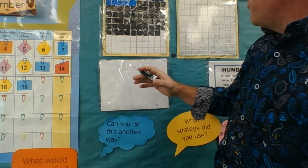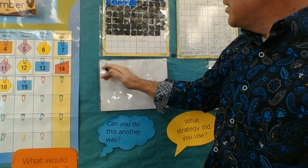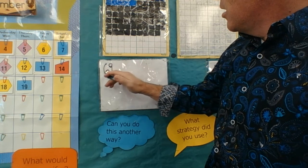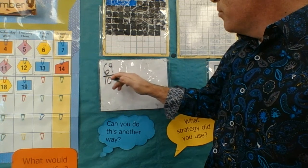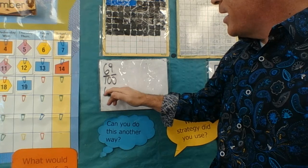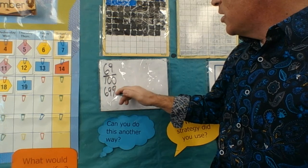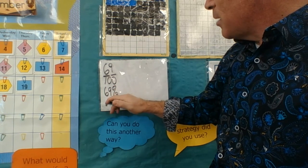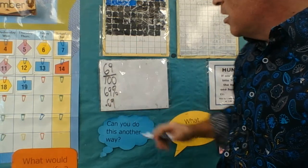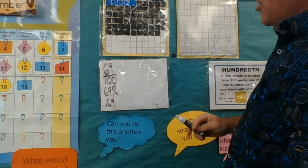And now for our application, this is going to be a fun one. We have 69 out of 100, and we wrote it as 69 on our daily ticker, and it also is the same thing as 69 hundredths.